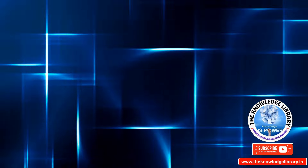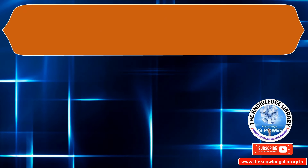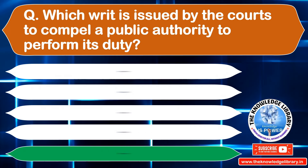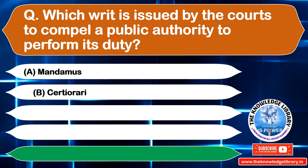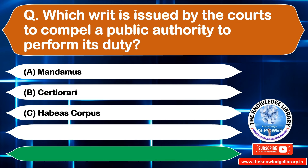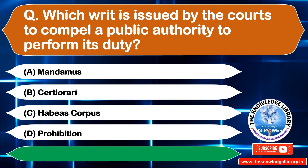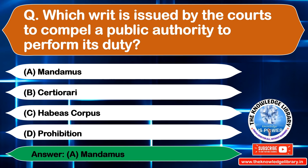The next question is: which writ is issued by the courts to compel a public authority to perform its duty? Option A: Mandamus, Option B: Certiorari, Option C: Habeas Corpus, Option D: Prohibition. The correct answer is Option A: Mandamus.